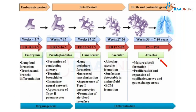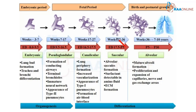Starting with histology: the lung develops in the embryonic period, then fetal period, then during birth and postnatal growth. The stages are embryonic from weeks 3 to 7, pseudoglandular from 7 to 17, canalicular from 17 to 27, saccular from gestational week 27 to 36, and alveolar from weeks 36 up to 10 years. By age 10 we all have a fully developed lung.